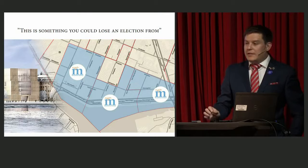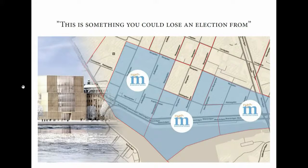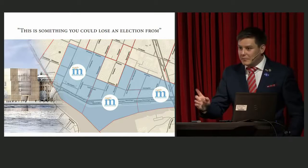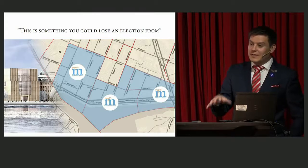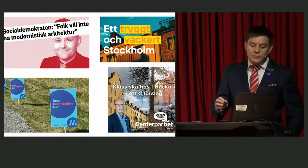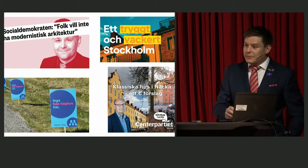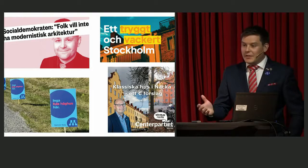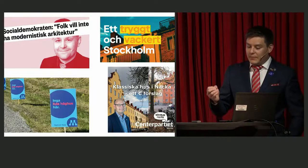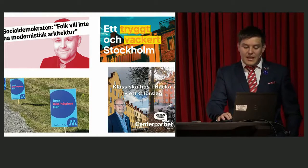This gave a wave into politics. This is the moment where people in politics realized that so many people in society care about this — they think this is important. The quote I remember best is from the Moderate Party in central Stockholm: 'This is something you could lose an election from.' And in Swedish elections since then, we can see things like: 'We want a safe and beautiful Stockholm' from the Social Democratic Party, 'No ugly high-rises' from the Moderate Party, or 'Classical buildings in our community' from the Center Party. This is something we've never seen before in a Swedish context — people in politics talk to their voters about architecture because they think it can gain them more voters.